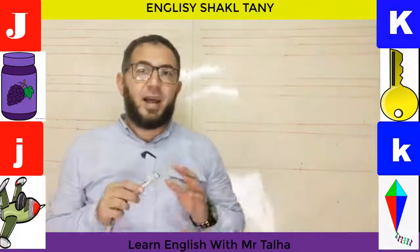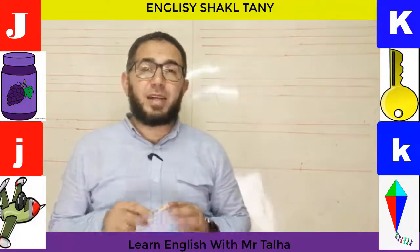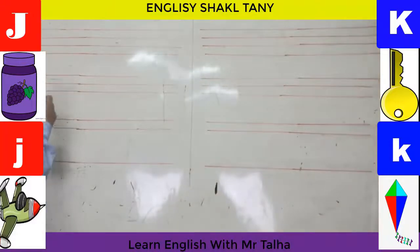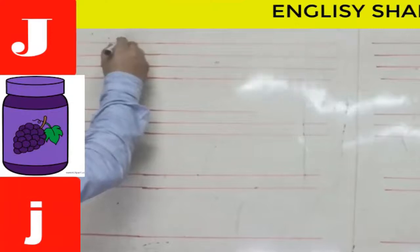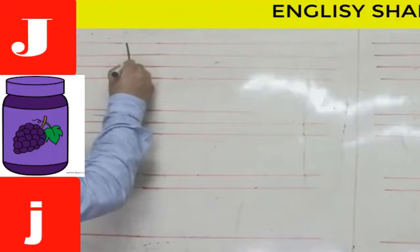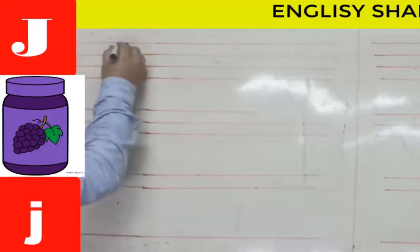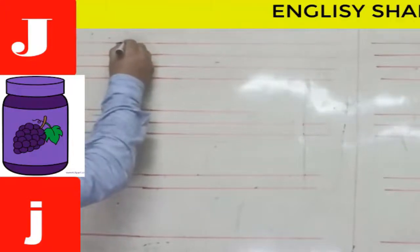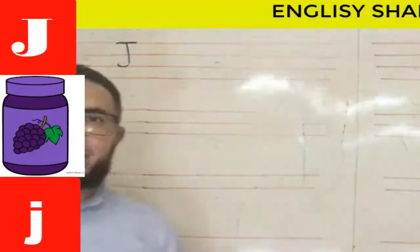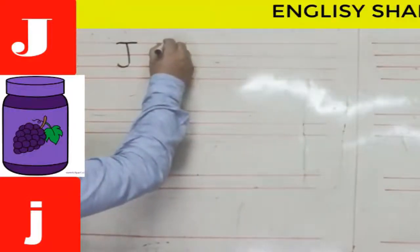Let's see how I write the letter J on the lines. Starting with the uppercase J: when I find four lines, I tell my child I'll start at the top and go down, then curve it at the bottom, and then make a sleeping line across the top. That's a capital J.